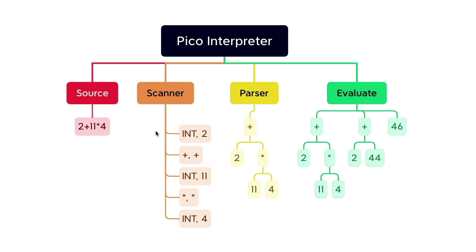So the first token is number 2 - the type is INT and the value is 2. The next token is plus - in this case the type and value are the same. Then we have the token with type INT and value 11, then a token with type and value both set to star, and then a token with type INT and value 4.